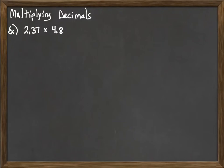Unlike adding and subtracting, we do not have to worry about lining up decimal points for multiplication. We just first multiply the numbers as if we were multiplying 237 times 48. So we would write that down vertically.